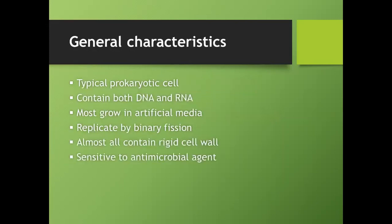The general characteristics of bacteria: bacteria are prokaryotic in nature, as opposed to eukaryotes. By now in your cell biology you should know what a prokaryotic cell is and what a eukaryotic cell is. Bacteria are typically prokaryotic, and importantly, they contain both DNA and RNA. This is important to know because later when we look at viruses, we'll see that viruses contain only one of them.